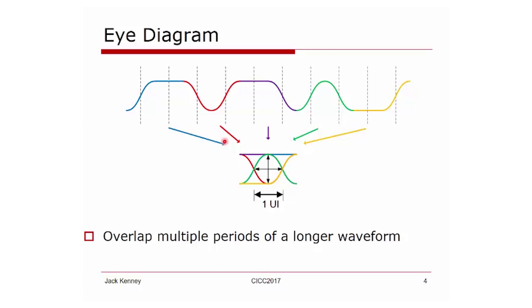Now let's move on to a little technical content. First, let's start with the concept of an eye diagram. The concept is you overlap multiple periods of a longer waveform. So here you see this yellow trace and then we overlap it with the green trace and we end up with a waveform that looks like an eye.